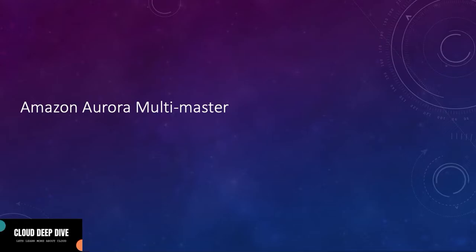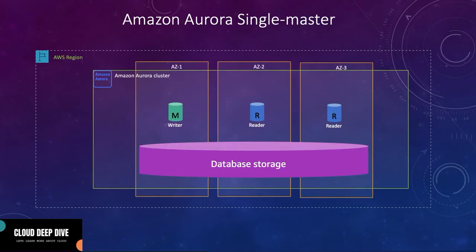Hello everyone, welcome back to another video of Cloud Deep Dive. In today's video we will talk about Amazon Aurora Multi-Master. In our last video where we discussed Amazon Aurora architecture, we discussed that in an Amazon Aurora cluster you will have common storage and one primary DB instance which will act as your writer node.